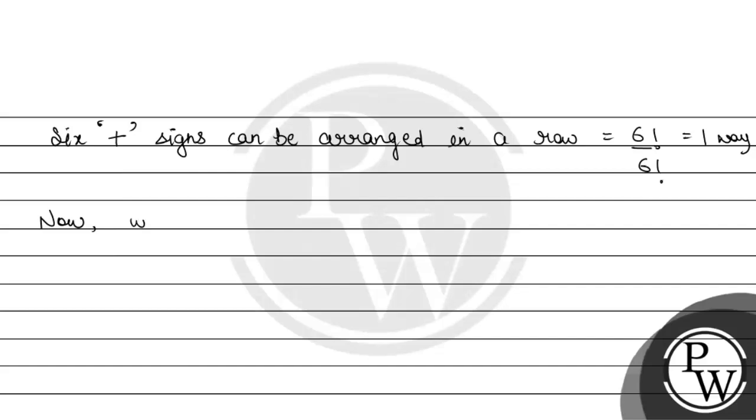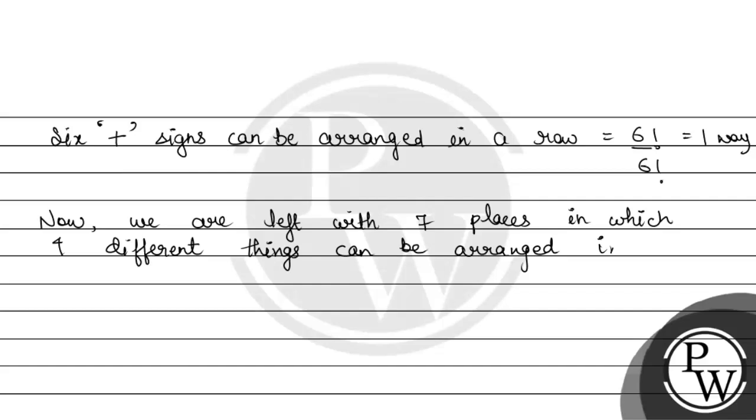Now we are left with 7 places in which 4 different things can be arranged in 7P4 ways.